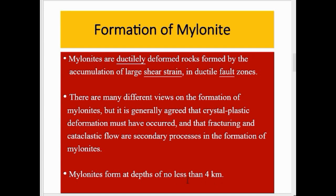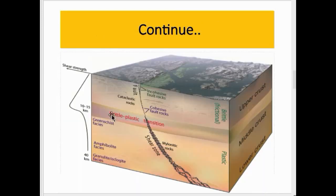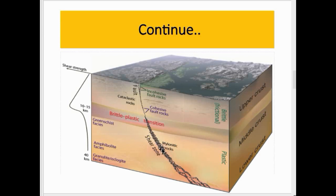Mylonites form at a depth of no less than four kilometers, or in the transition zone around that depth. This schematic shows how mylonite forms, illustrating the upper crust, middle crust, and lower crust, with a fault zone running along these planes. The plane is highly deformed due to the fault zone, and mylonite rock forms near the shear zone.